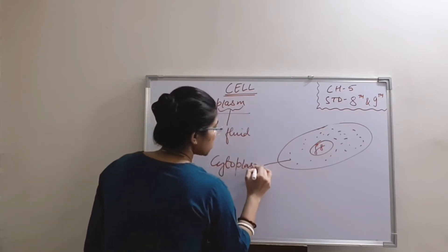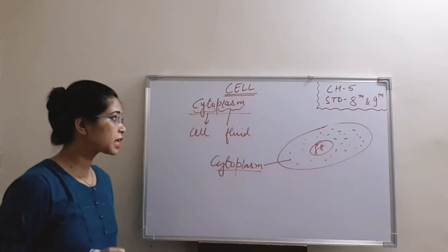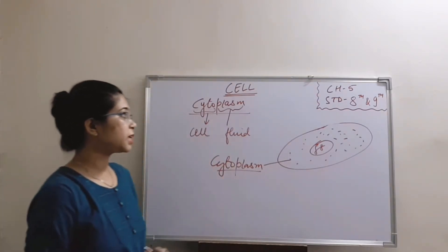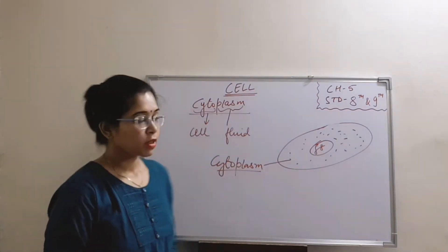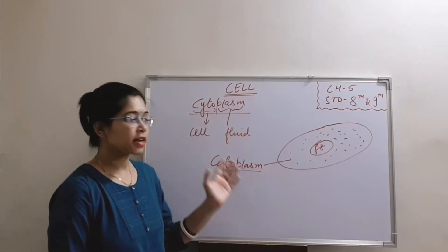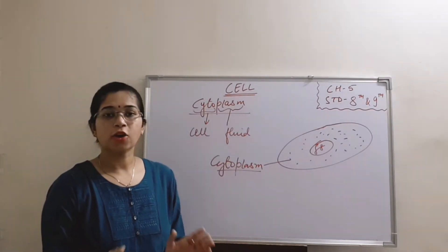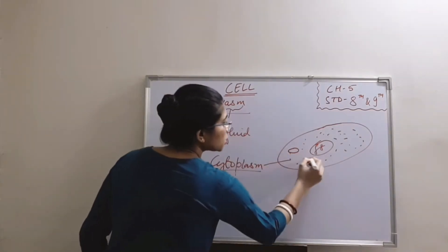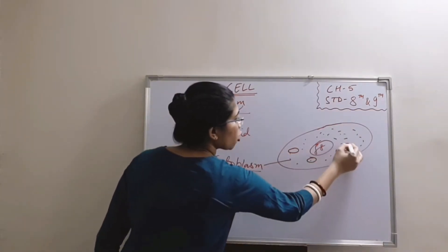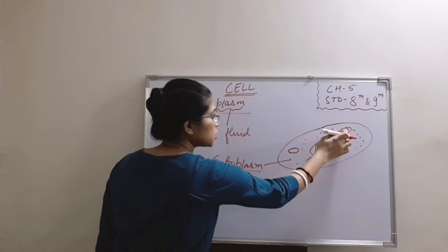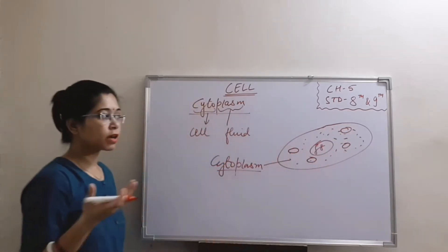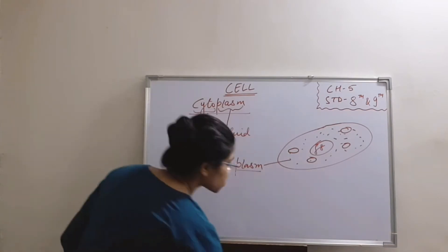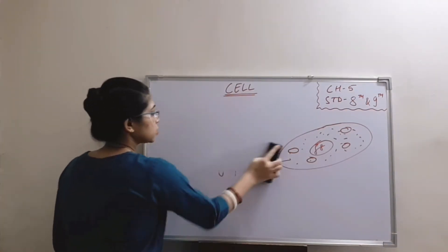Cytoplasm is a gelatinous substance which keeps the cell hydrated. It is helpful in maintaining the proper shape of the cell. The cytoplasm acts as a medium for all cell organelles to float. Different types of cell organelles are present in the cell, and these organelles get the medium to float within it.